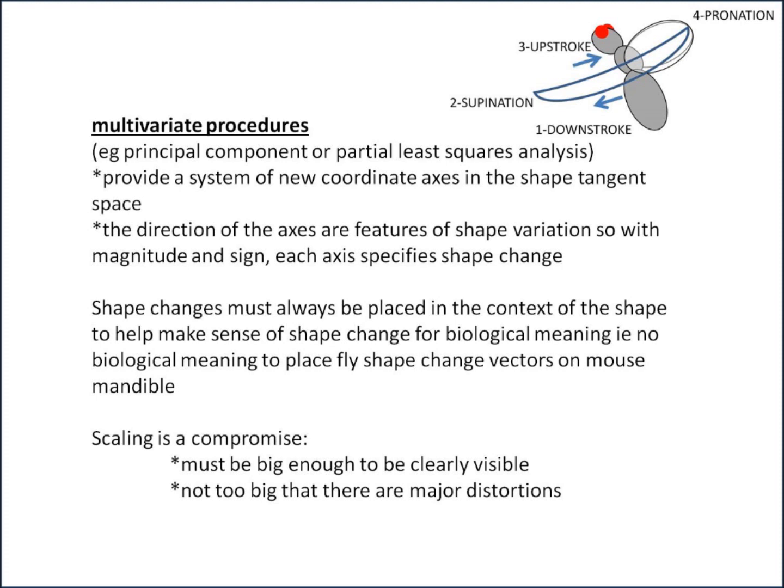If the analysis is in the space of Procrustes coordinates, so tangent space, coefficients from the multivariate analysis—either the eigenvector for PCA or the singular vector for partial least squares—can be used to visualize shape change with scaling. Multivariate regression of shape on another variable yields a vector of regression coefficients that indicates the change of shape per unit of change in the independent or predicted variable.